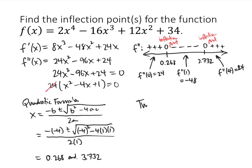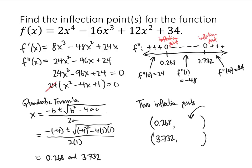So I've got two inflection points, but inflection points are points, which means they have coordinates. The x-coordinate of my first inflection point is 0.268, and the x-coordinate of my second inflection point is 3.732, but I need to find the corresponding y-coordinates. I do that by plugging into the original function. f of 0.268 gives me 34.564, and plugging 3.732 into my original function gives me negative 242.564.